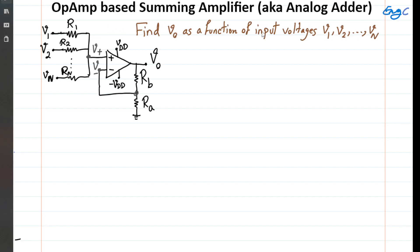An op-amp-based summing amplifier, also known as an analog adder or linear combiner, is shown here. We want to find Vout as a function of N independent input voltage sources V1, V2, up to Vn. Looking at the connection from output to input, you can see it goes to the negative terminal, so the op-amp is properly set in negative feedback mode.